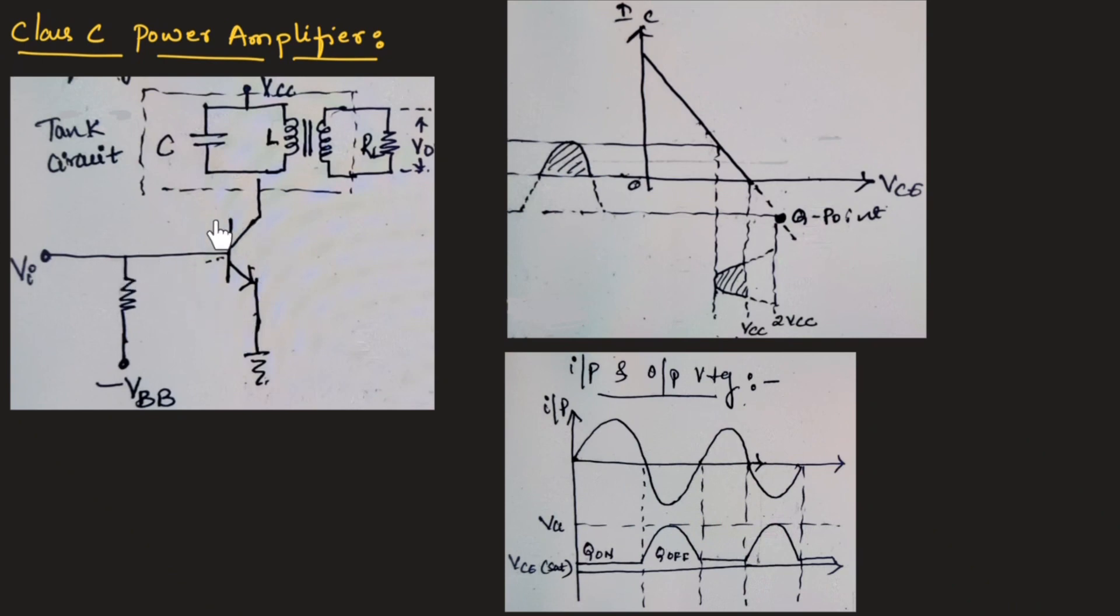The transistor will conduct only when the input voltage or the input signal exceeds the cut in voltage of the base emitter junction. This is the input and output waveform. During positive half of the input, the transistor will be on. That is why the output will be constant across the load resistor.